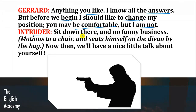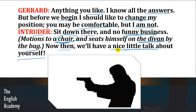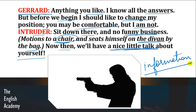Intruder says: 'Sit down there and no funny business.' Motions to a chair and seats himself on the divan by the bag. 'Now then, we'll have a nice little talk about yourself.' Intruder Gerard ko kehta hai ke vahin par baith jao aur mere saath koi harkat karne ki koshish mat karna. Intruder Gerard ke bag ke paas divan par baith jaata hai — kyunki woh Gerard ki identity steal karna chahta hai, Gerard ka khoon kar dena chahta hai, aur khud Gerard ban kar jeena chahta hai. Toh woh Gerard ke baare mein basic information lena chahta hai.